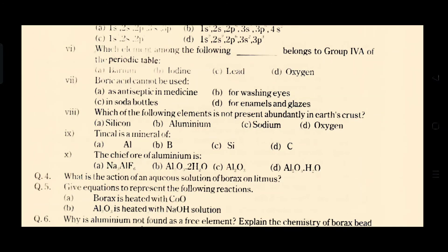And the last MCQ is the chief ore of aluminium is bauxite having the formula Al2O3.2H2O. So option B is the correct option for MCQ number 10.